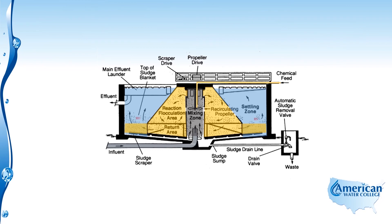The area where the sludge blanket occurs at the bottom portion is a very important control mechanism in the upflow clarifier, because it helps to filter the floc and clarify the water. Maintaining a proper sludge blanket through proper sludge wasting rates is very important for the operator to pay attention to.